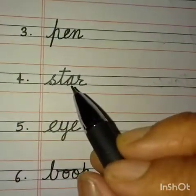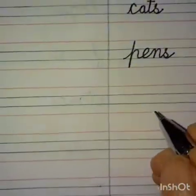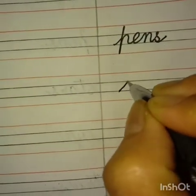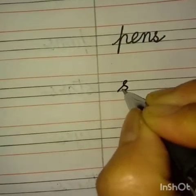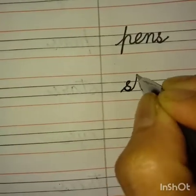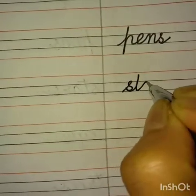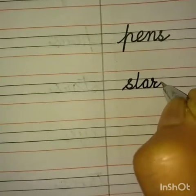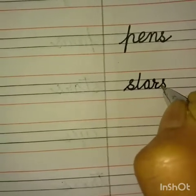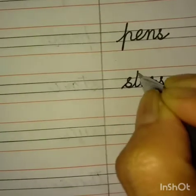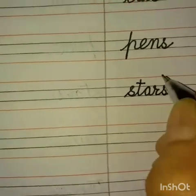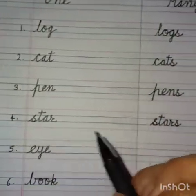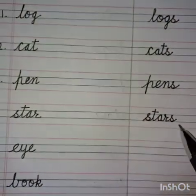Number four: S-T-A-R — Star. For many: S-T-A-R-S. Cross the T. One star, many stars.